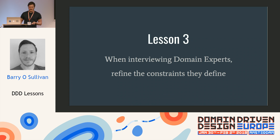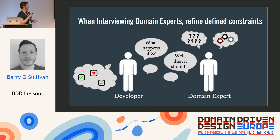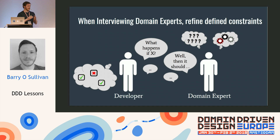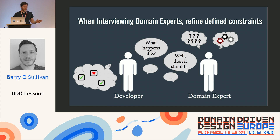Lesson three: when interviewing domain experts, refine the constraints they define. This is a two-stage process. When you're talking to a domain expert, your goal is to find the constraints of the system — how does the system actually behave, what are the hard rules it has? Anytime they give you a constraint, drill down to find the sub-constraints of that system and keep iterating until you have as many constraints as you could possibly imagine. Then you refine it. You don't build exactly what they said, because they've given you not just everything they believe should happen but also their idealized scenario and ideal constraints.